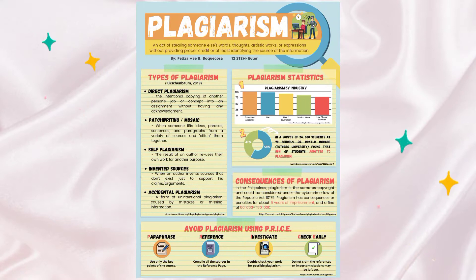Our second activity was about making a social campaign infographic. We were tasked to pick a specific societal issue and make an infographic about it. Our group chose to make an infographic about plagiarism. This topic is under our seventh lesson: Legal, Ethical, and Societal Issues. I enjoyed making this infographic and also learned a lot about plagiarism.